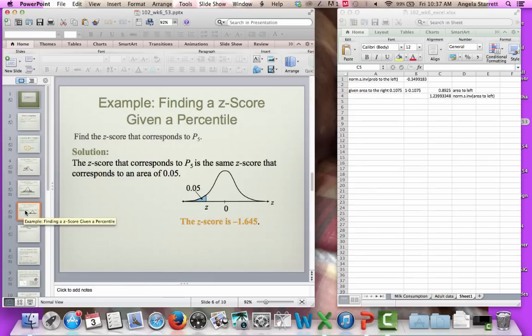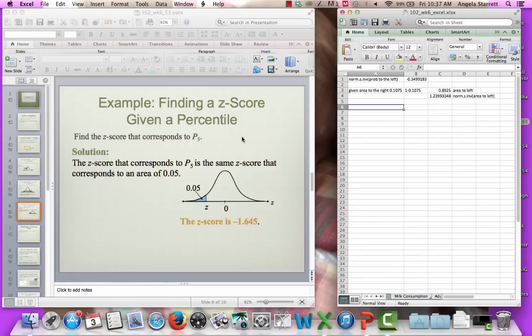Let's work through another one. Here's one where we're going to be given a percentile. Find the z-score that corresponds to P5. If we're given P5, P5 just means 5% below. P5 means 5% below. If I were to give you P80, that means 80% below. So here we have P5, so given area to the left is 0.05. I'm just going to use my norm.s.inv. My area to the left is 0.05 or 5%, and I get a z-score of negative 1.645.